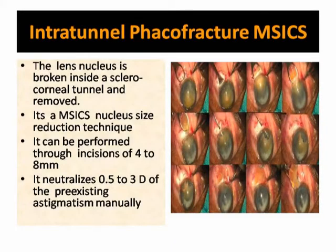Intratunnel FACO fracture is a nucleus management technique of manual small incision cataract surgery, in which the lens nucleus is broken inside a sclerocorneal tunnel and removed.